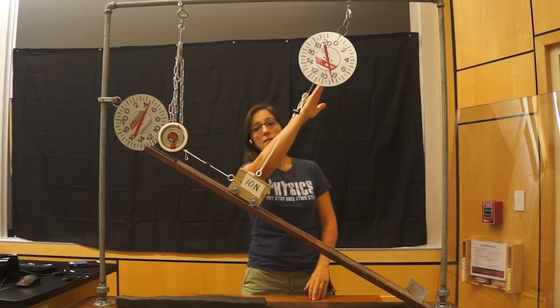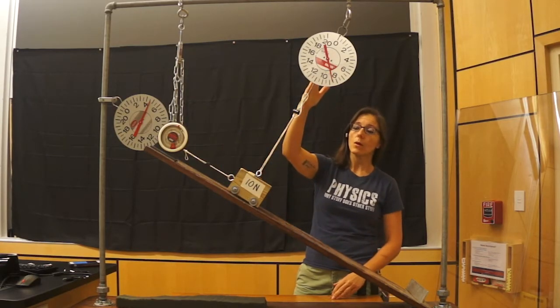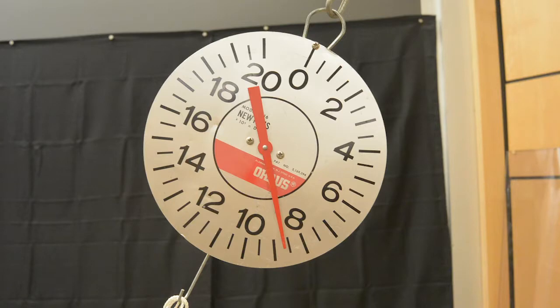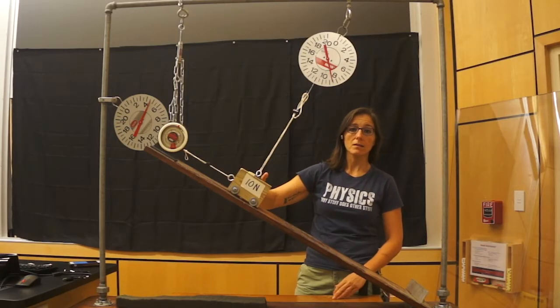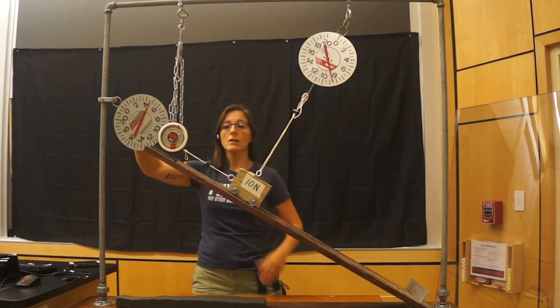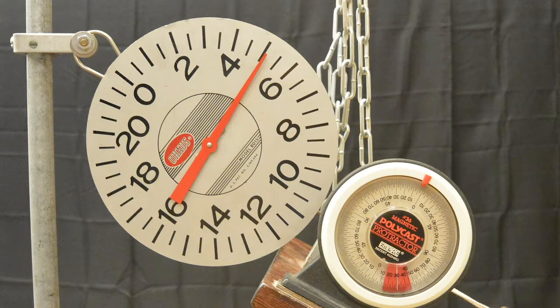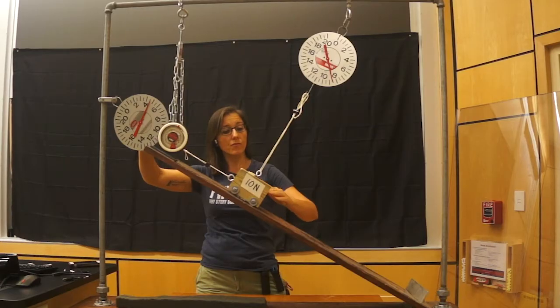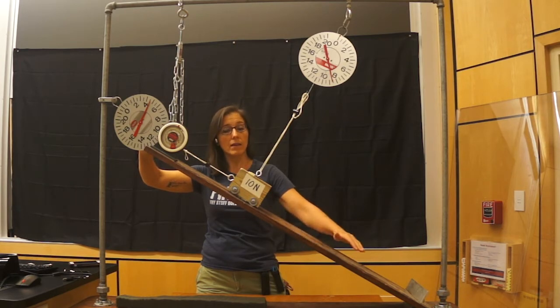A spring scale is set up here to show you the support force acting perpendicular to the plane of the incline. Another spring scale is set up here to show you how much force it takes to balance the force of gravity along the incline.